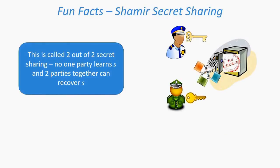This particular scheme is called a 2-out-of-2 secret sharing scheme. That is, no one party learns s, and two parties together can recover s.